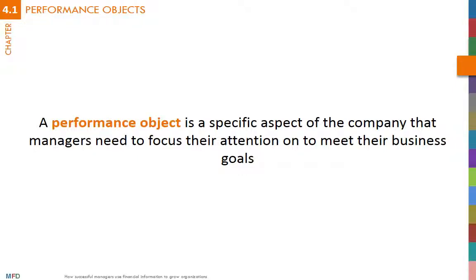A performance object is a specific aspect of the company that managers need to focus their attention on to meet their business goals. Products and services are the classic performance objects for which it is important to calculate the profitability. With this information, managers identify the most profitable products to promote and also identify the least profitable ones to modify or eliminate them.